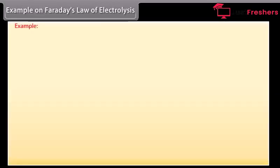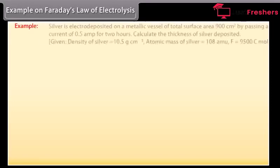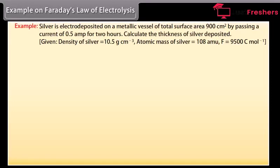Example on Faraday's law of electrolysis. Let's take an example on Faraday's law of electrolysis. Silver is electro deposited on a metallic vessel of total surface area 900 cm square by passing a current of 0.5 ampere for 2 hours. Calculate the thickness of silver deposited.